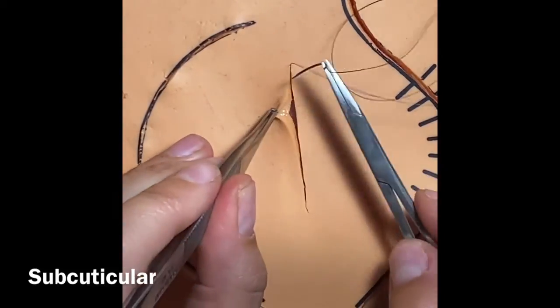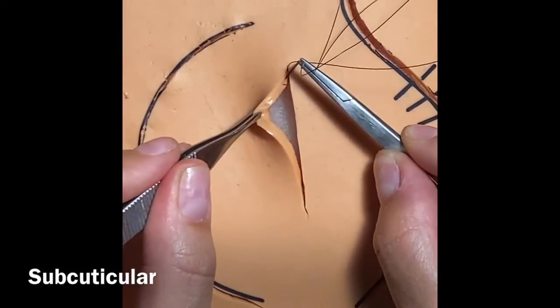I'm right-handed, so I like to start on the left side. Evert the skin up, go in at that dermal epidermal junction, and you're going to move in the direction of the skin, just like that.